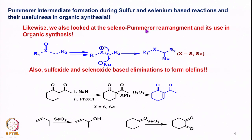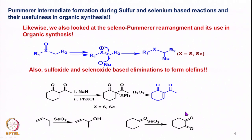Then we looked at Pummerer intermediates from sulfur as well as selenium-based reactions, which are used in organic synthesis by trapping this intermediate whether X is sulfur or selenium. The sulfoxide and selenoxides lead to this particular seleno- or sulfur-intermediate. We also saw how sulfoxides and selenoxides, where X is sulfur or selenium, can undergo elimination via sulfoxide or selenoxide to form the corresponding double bond. With selenium dioxide-based oxidations, allylic alcohol oxidation and 1,2-diketone formation from ketones were also discussed.